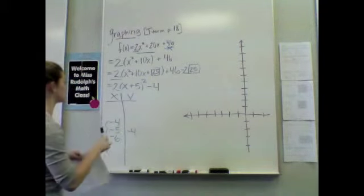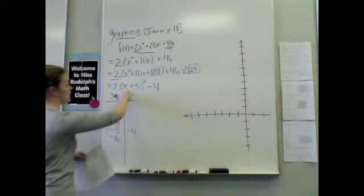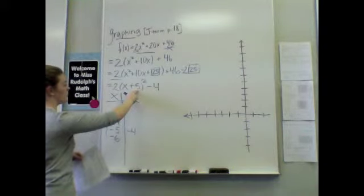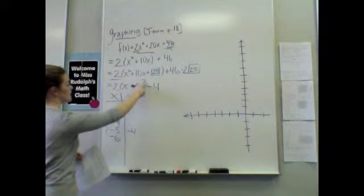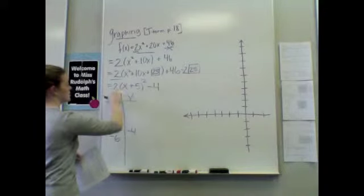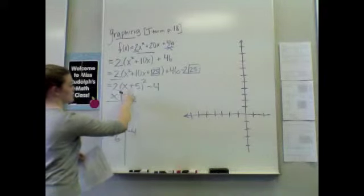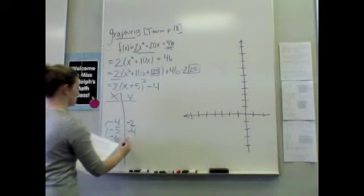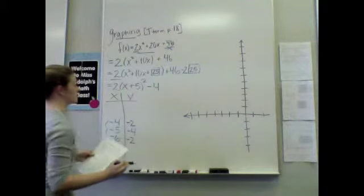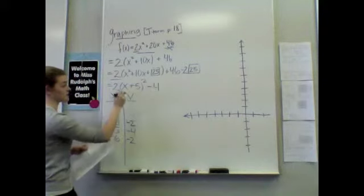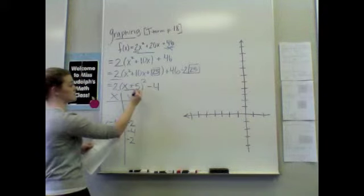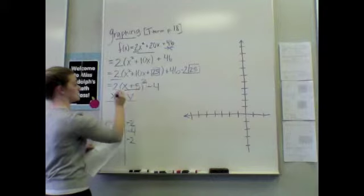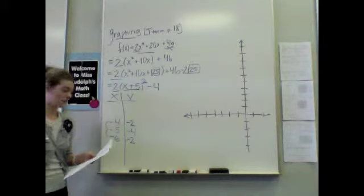They should have the exact same coordinate for y. So, let's plug in negative 4. Negative 4 plus 5 is 1. 1 squared is 1. 2 times 1 is 2, and 2 minus 4, that will give me negative 2. Should be the same for negative 6. I do want to point out that because of PEMDAS, you do inside the parentheses first, then your exponents, then you can multiply. Don't forget that.